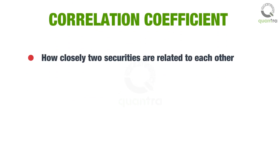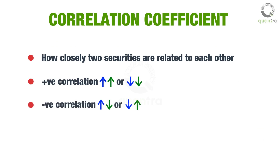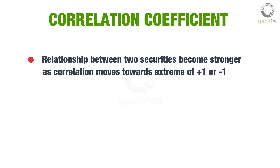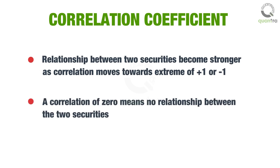The correlation indicator tells how closely two securities are related to each other. A positive correlation indicates that the two securities under observation move in the same direction — up or down. If two securities move in opposite directions, they will have a negative correlation. Correlation ranges between plus 1 and minus 1, and as the correlation moves towards the extremes of plus 1 or minus 1, the relationship between the two securities becomes stronger, while a correlation of 0 means there is no relationship between the two securities.